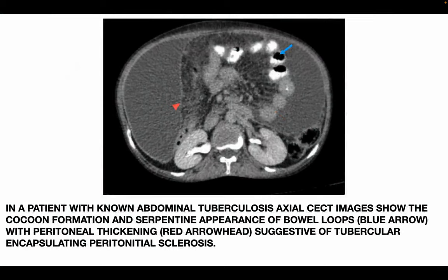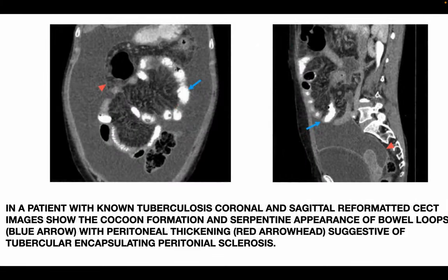This is another case of a patient with non-abdominal TB. Axial CT image shows cocoon formation and serpentine appearance of the bowel loops (blue arrow), with peritoneal thickening (red arrowhead), suggestive of tubercular encapsulating peritoneal sclerosis. Coronal and sagittal reformatted images of the same patient confirm the cocoon formation with peritoneal thickening.